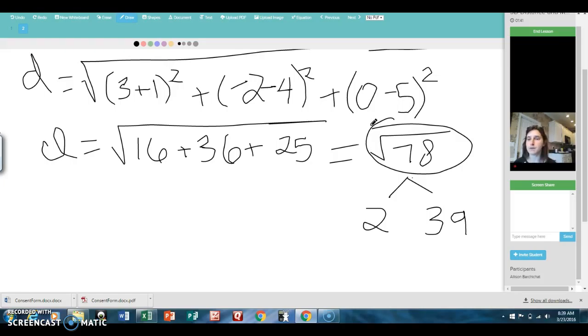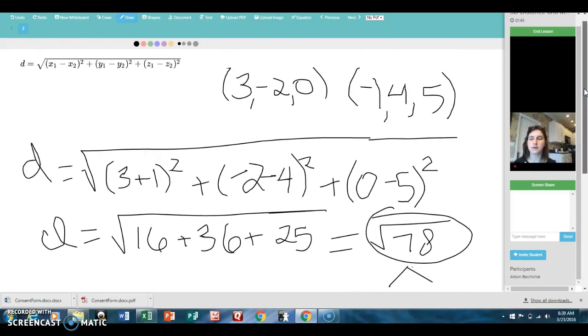Now, let's take a look at midpoint. Let's scroll back up so we can capture one of these ordered pairs. I'm going to use the first one here, the 3, negative 2, 0. So let's start a new page.